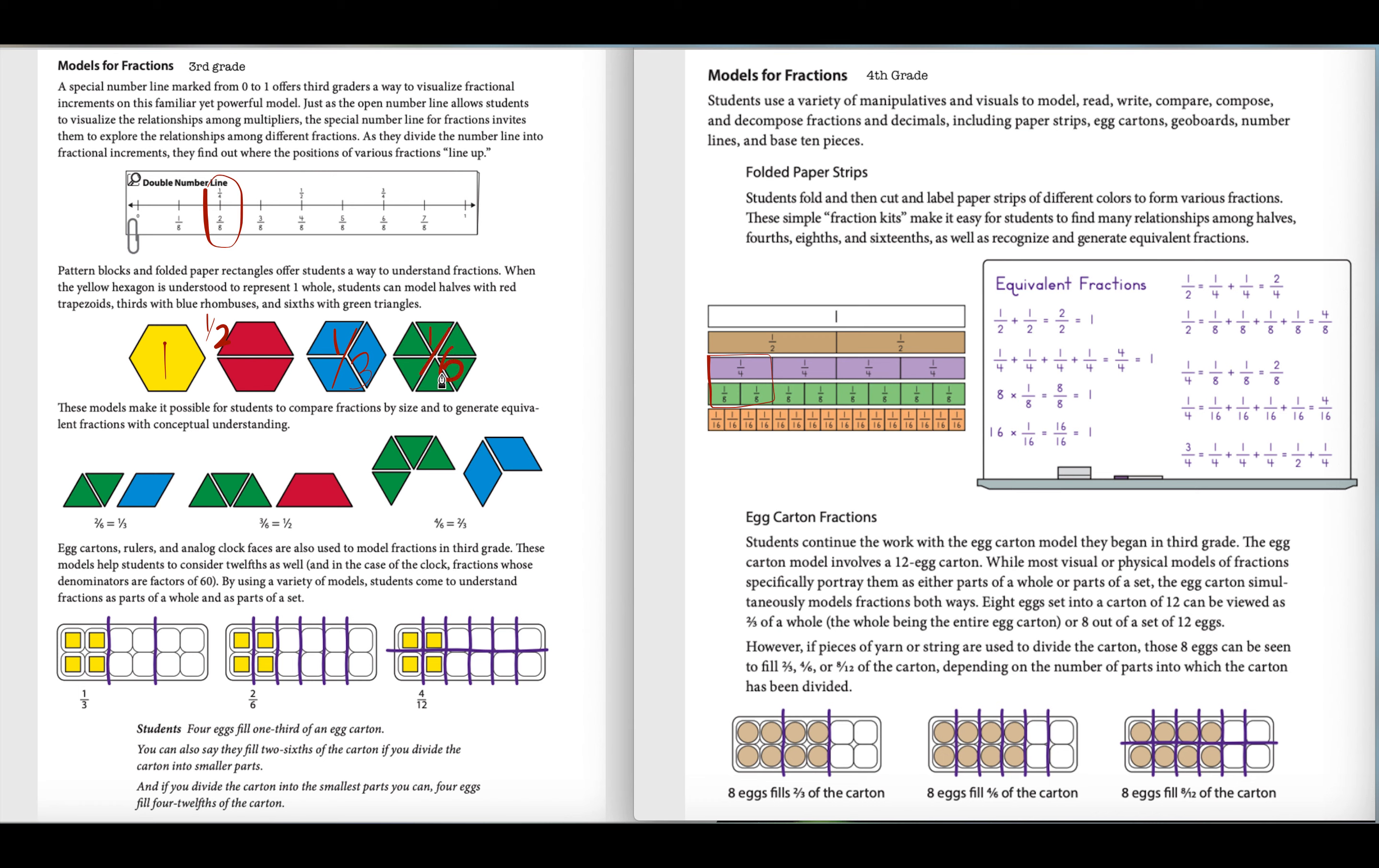And so this is used through the pattern blocks, and you can see again how they're starting to really seed that equivalent fraction of two-sixths equals one-third and how that's visually represented, three-sixths and one-half, and then four-sixths and two-thirds.